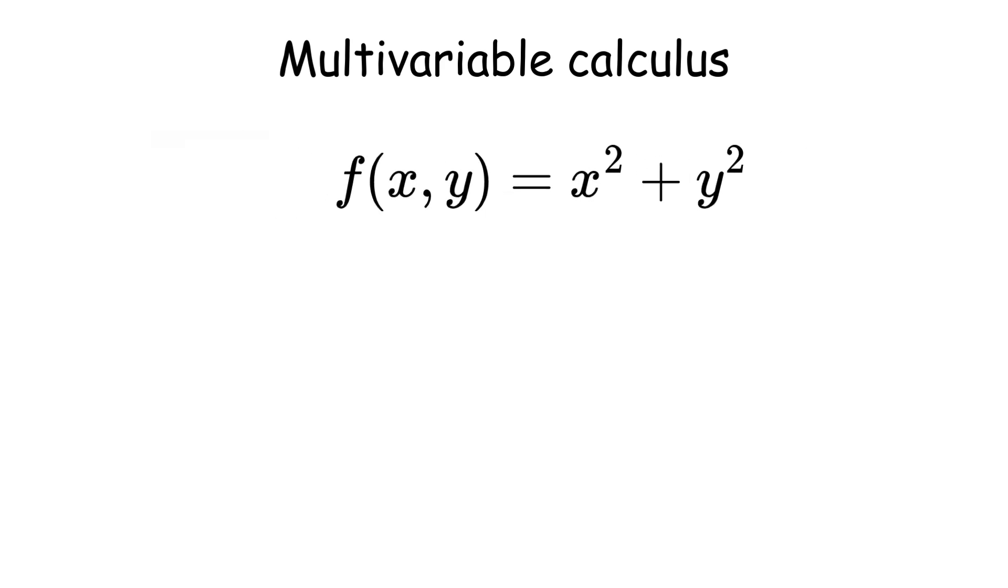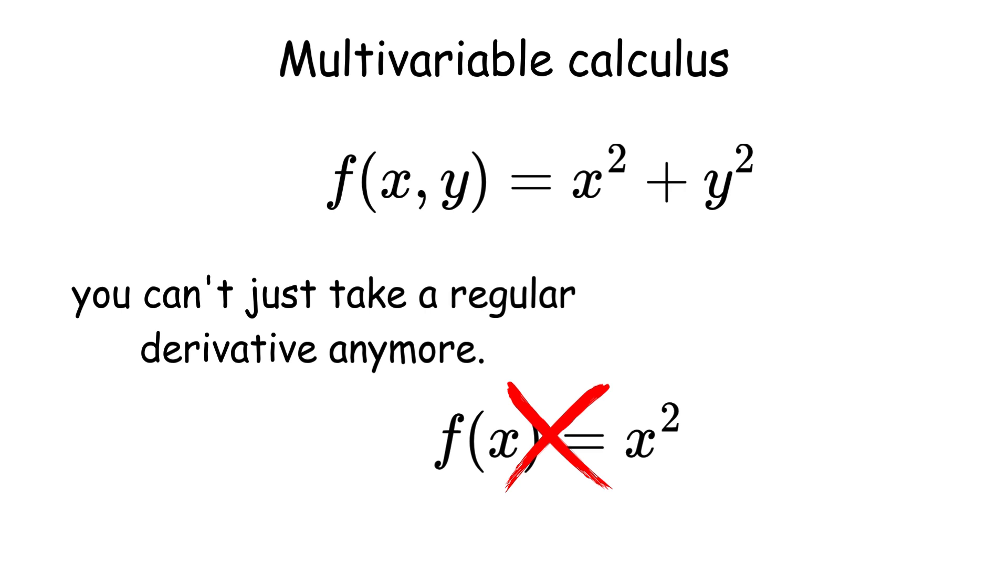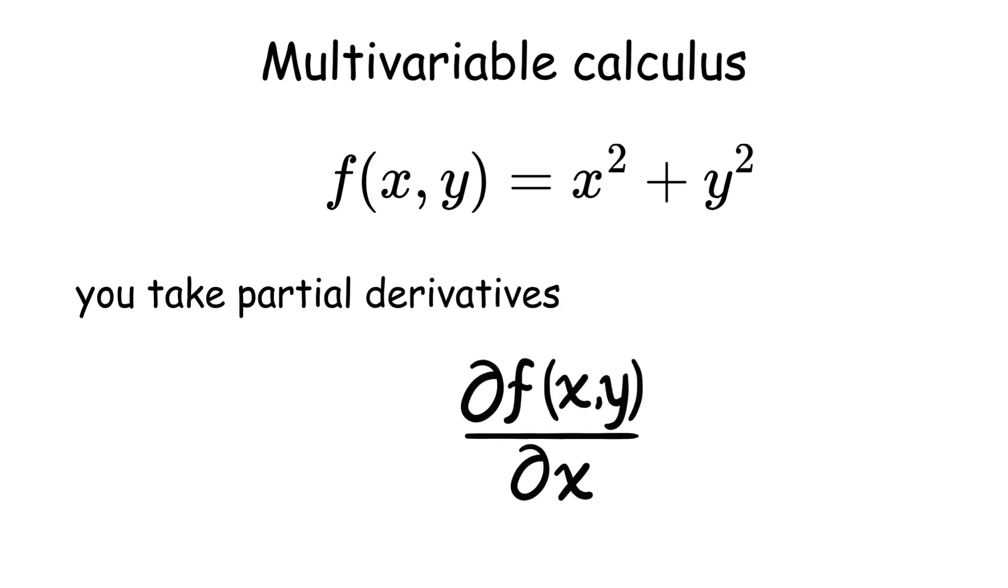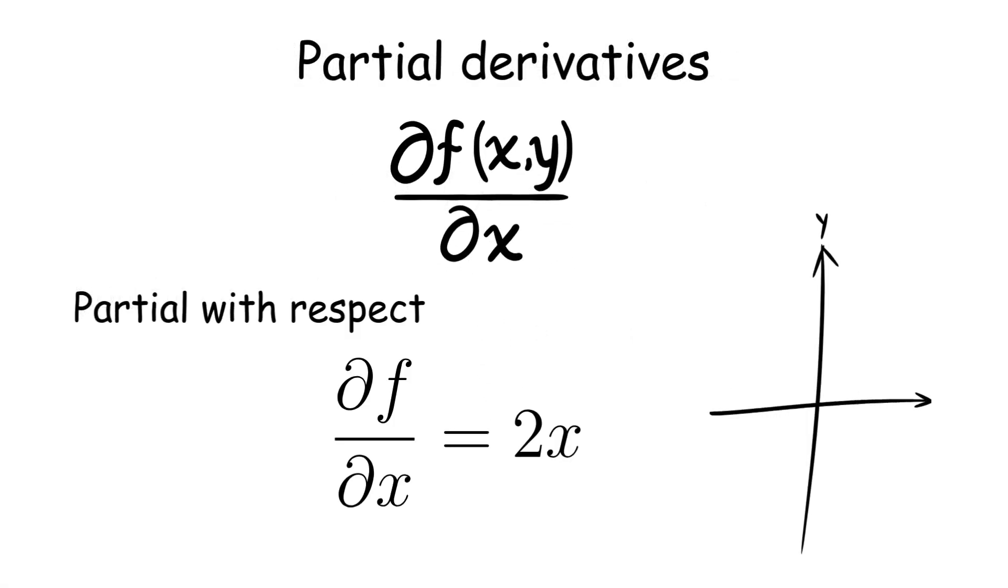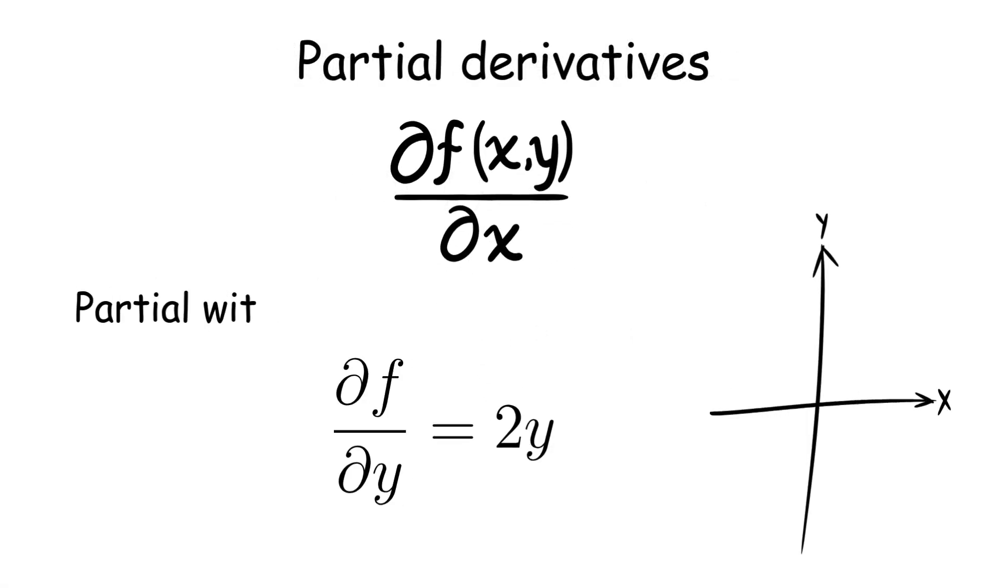When you have a function like this, you can't just take a regular derivative anymore. Instead, you take partial derivatives, treating one variable as constant while differentiating with respect to the other. So the partial derivative with respect to x gives you 2x, and the partial derivative with respect to y gives you 2y.